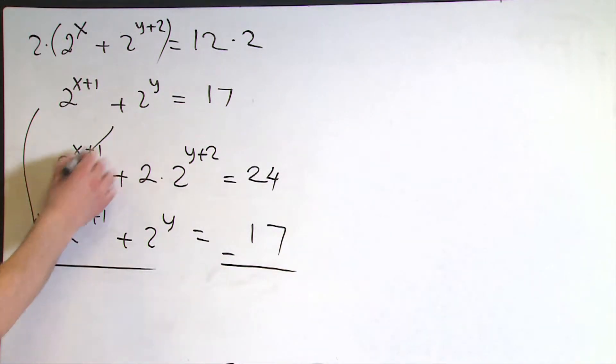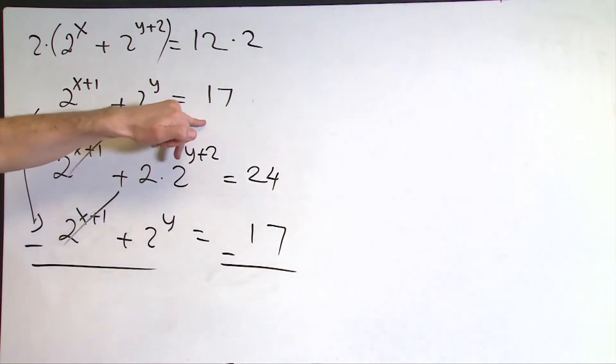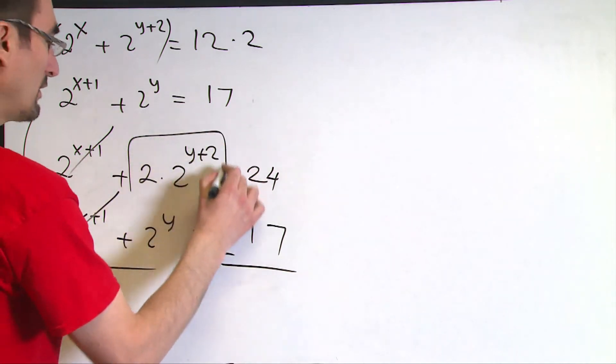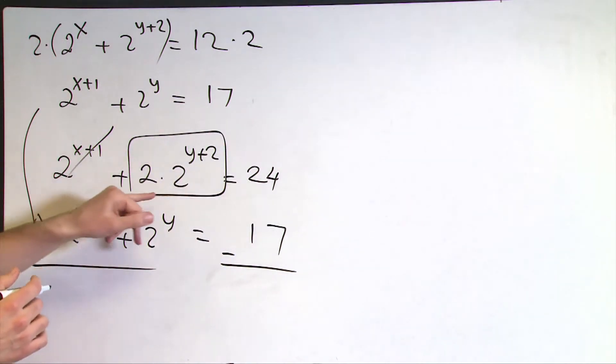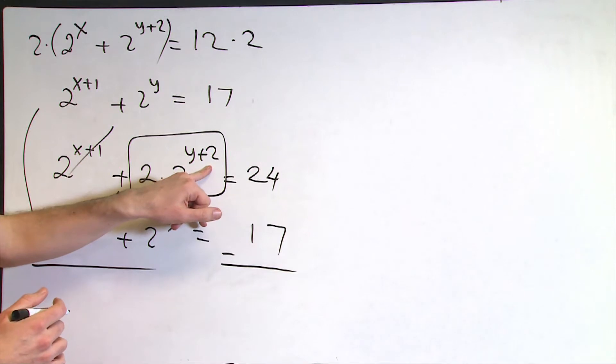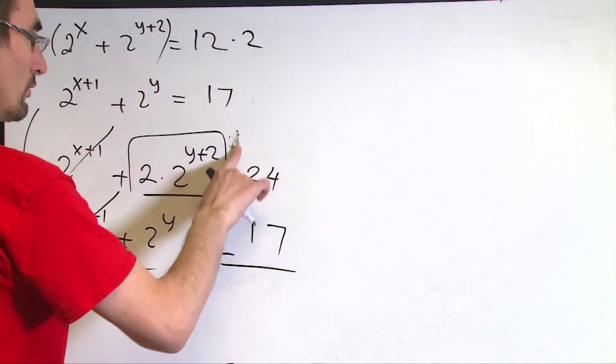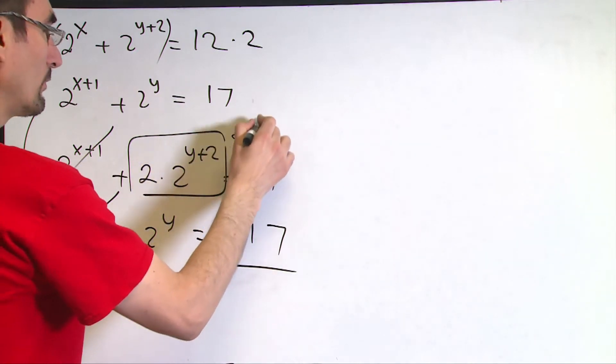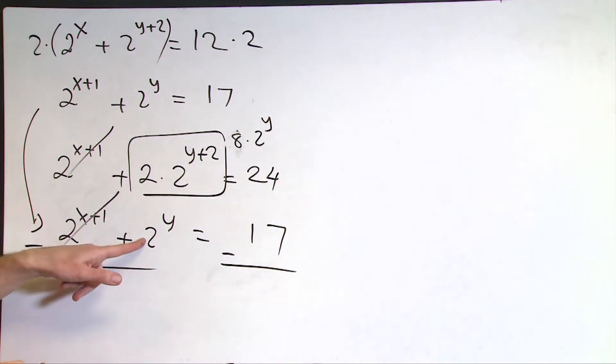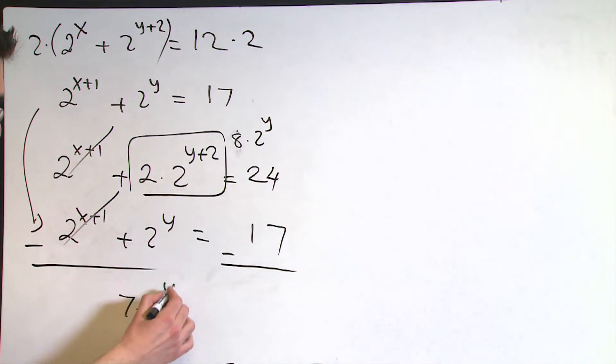Now I noticed that these two expressions are the same and I can get rid of them by subtracting either side. So this will cancel out each other, remaining 2 times 2 to the power y plus 2 minus 2 to the power y. Just notice that this expression is nothing but 2 to the power 2 equals 4 times 2, which equals 8 times 2 to the power y minus 1 of them, leaving us 7 times 2 to the power y equals 24 minus 17, which is 7.